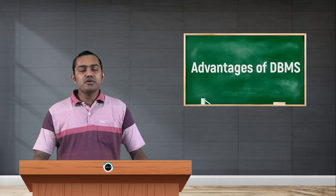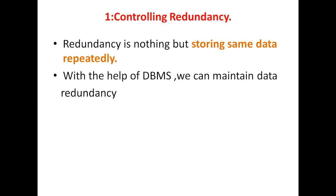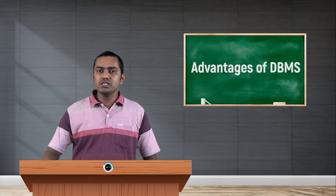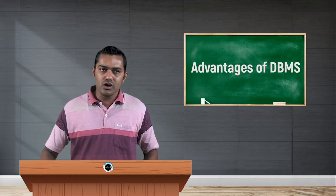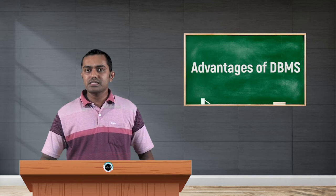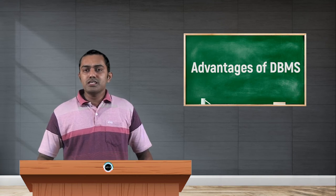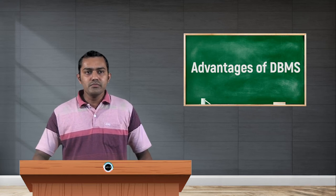The first advantage of a database management system is controlling redundancy. Redundancy means storing the same set of data in multiple locations. That is the main disadvantage we faced in the file management system. In different locations we are storing different sets of data, and each time we are accessing — if we don't find any data, we have to store it again in different locations. There is no link, so multiple data are stored in multiple locations. To overcome this, the database management system provides the solution of controlling redundancy.